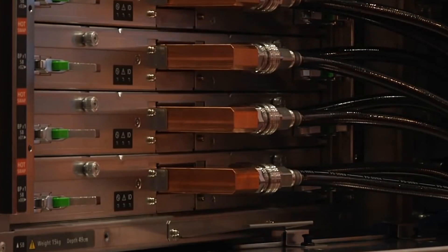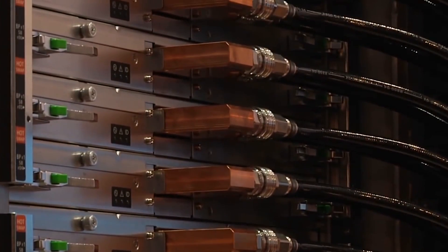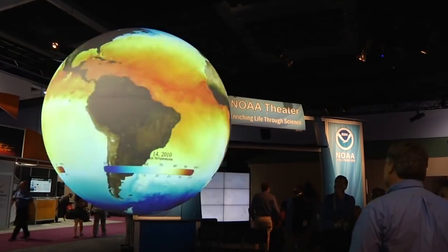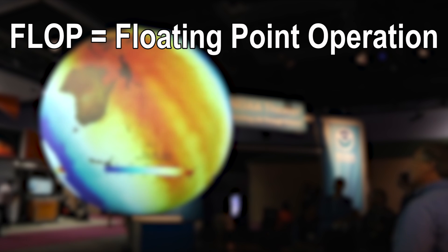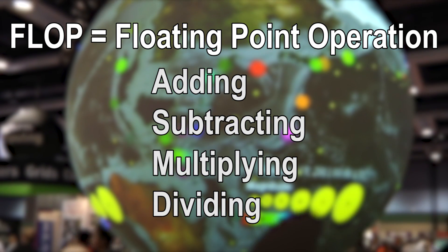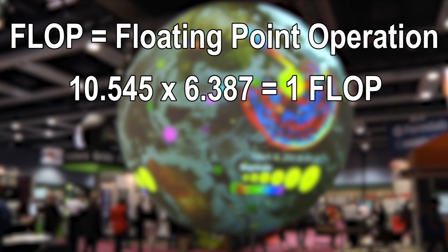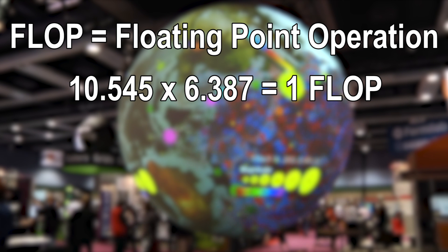In this video we'll see just how powerful supercomputers have become, but first we need to know: how do you measure a computer's performance? There are lots of ways to do this, but the most common for high-performance systems and the simplest to understand is to measure how many calculations per second they are capable of. The unit of measurement is called the flop, or floating point operation. A flop is a calculation that would be either adding, subtracting, multiplying or dividing two numbers with decimal points in them. For example, 10.545 multiplied by 6.387 would be a single flop.